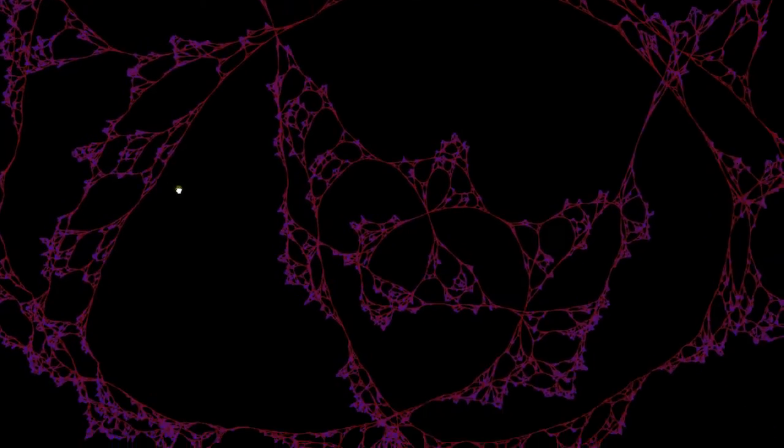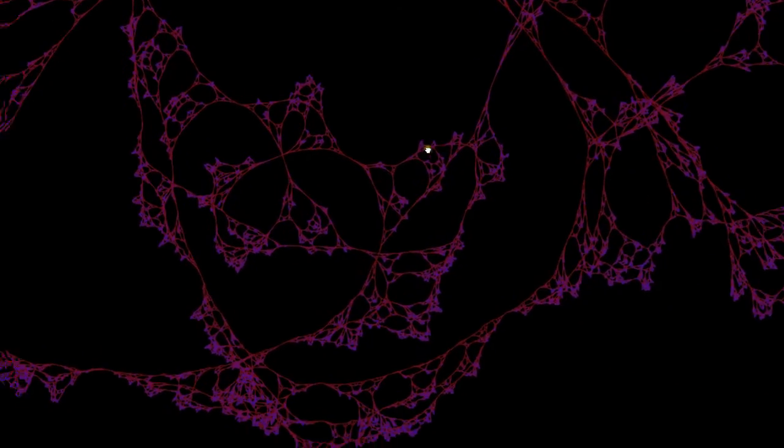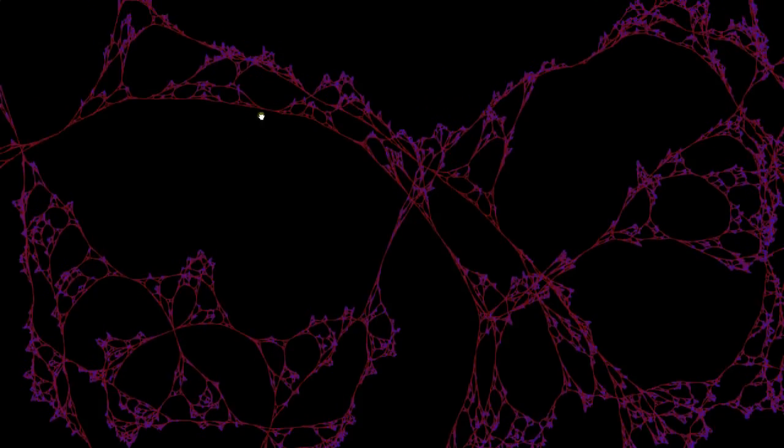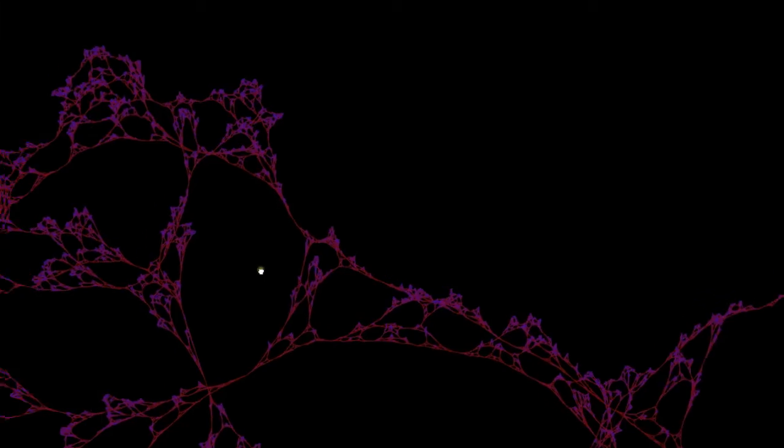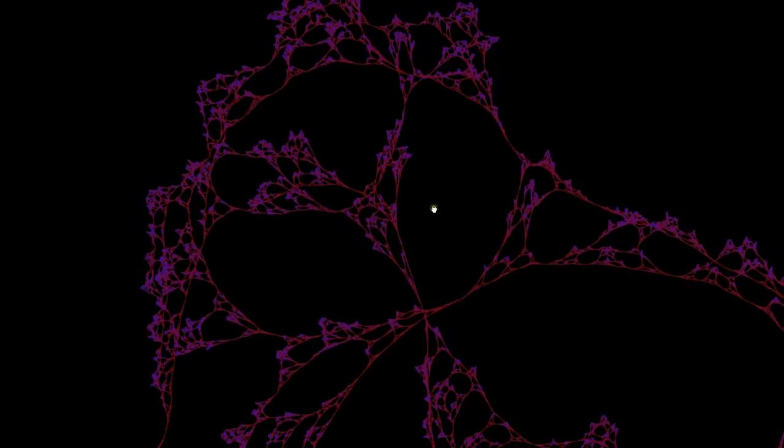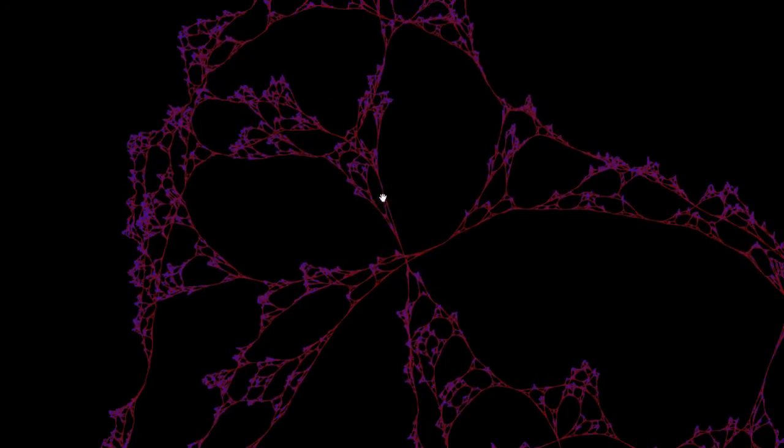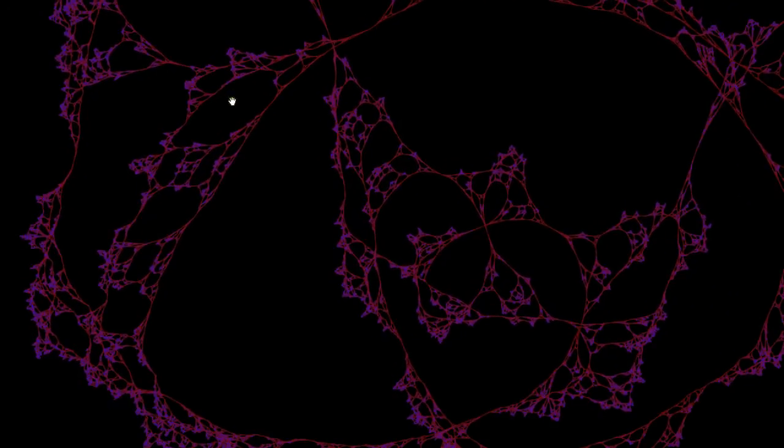Although the structure here does seem extremely intricate, this network was actually grown via incredibly simple deterministic rules. Rules which are so simple that a child could easily understand them.